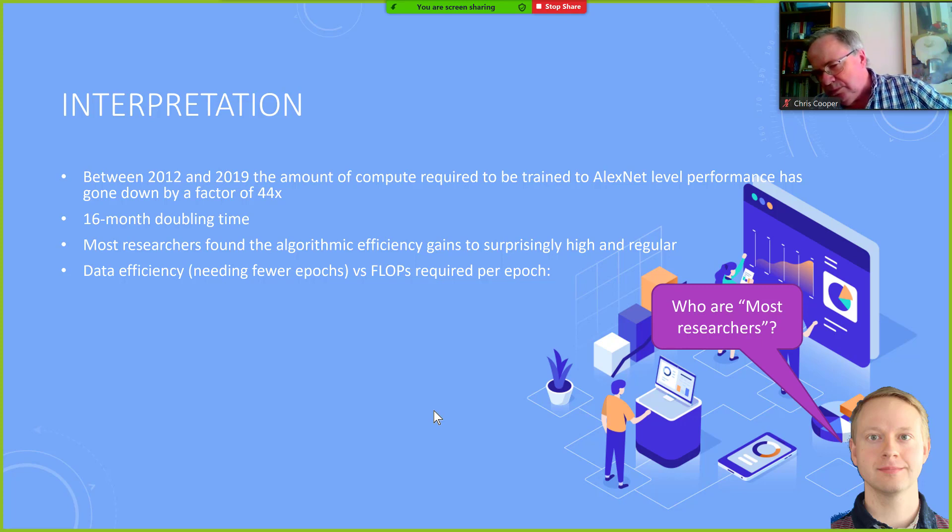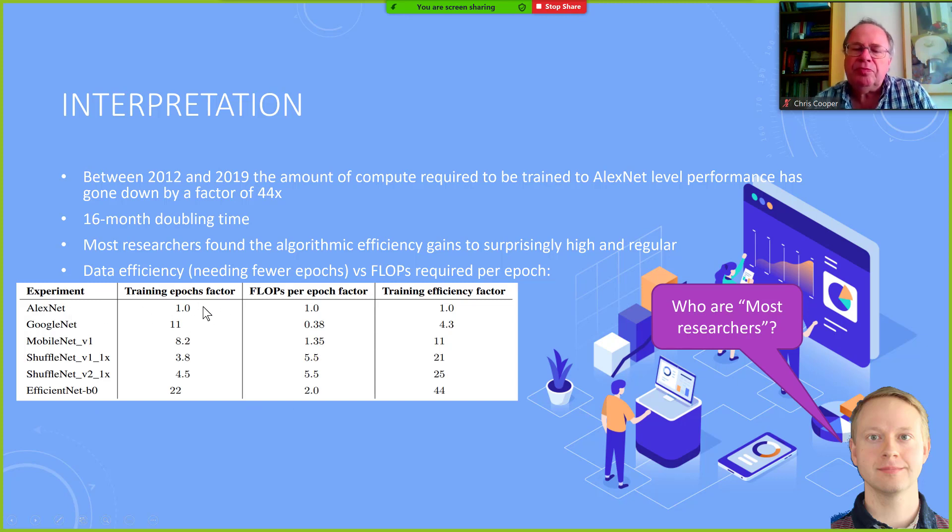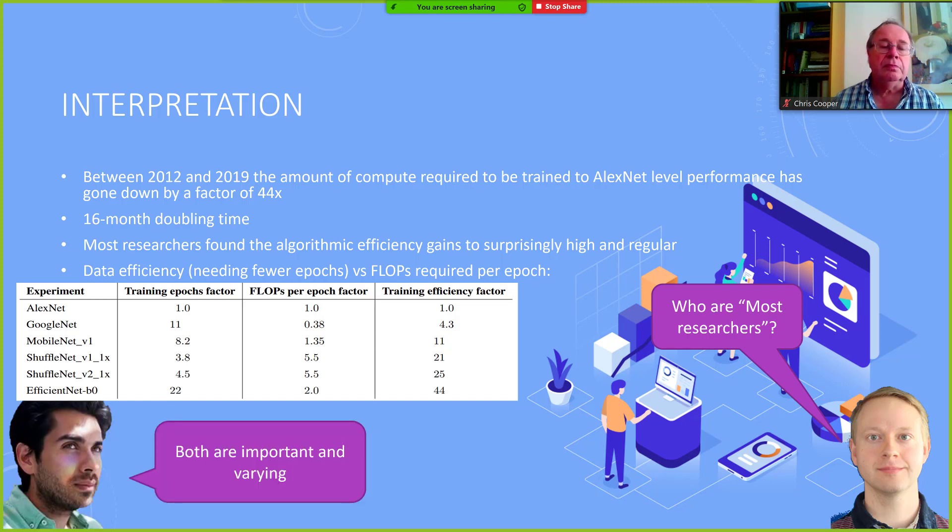So one of the things they do is they split this up into how efficient are we at learning with the data, and how much does it require to learn from the images. And here you can see AlexNet, if we normalize by AlexNet saying they had a factor of 1 on the number of epochs, and each epoch also took 1, and then you multiply these two, you get an efficiency factor. So for instance, GoogleNet trains with only 1 eleventh of the number of epochs, but it then needs to train almost between two and three times as long per epoch. Whereas if you go to some of the normals down here, where it's twice as fast here, the EfficientNet, and it only requires 1 twenty-second of the data.